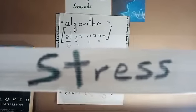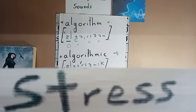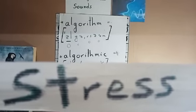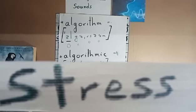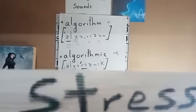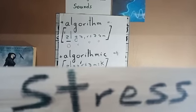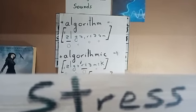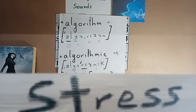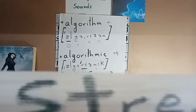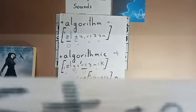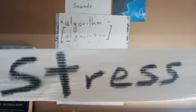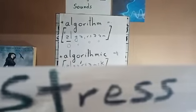Now let's practice them again using this elastic band, which showcases the stressed syllable. The first word is 'algorithm.' As you can see, the band stretches on the first syllable and then contracts: algorithm. The second word is 'algorithmic.' As you can see, the band stretches on the third syllable: algorithmic.